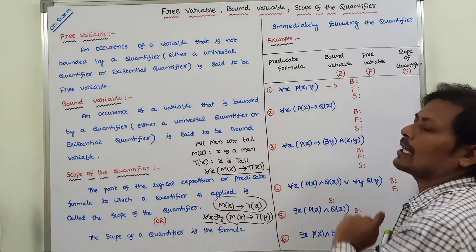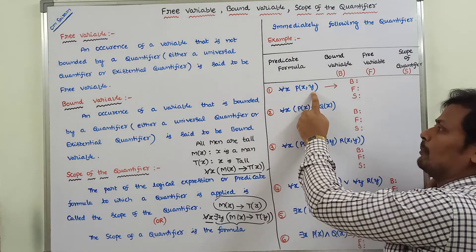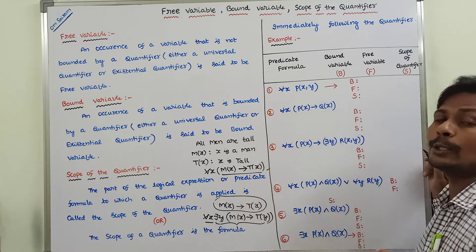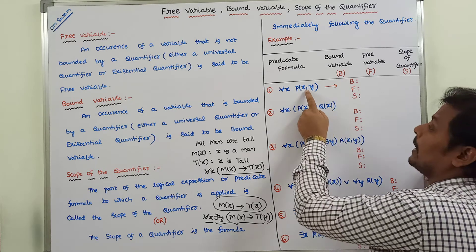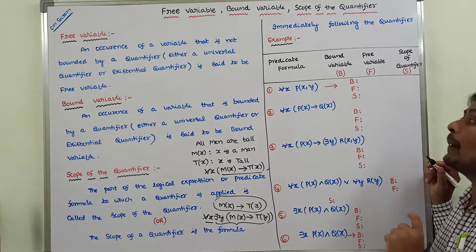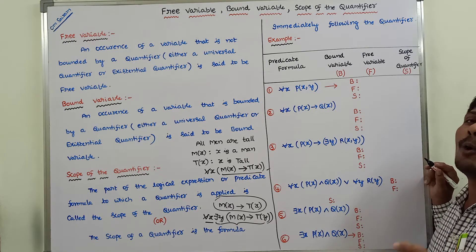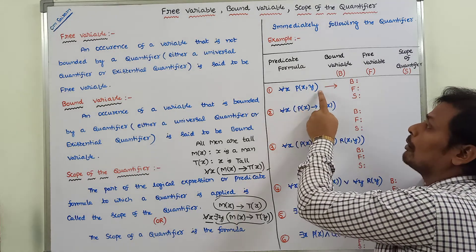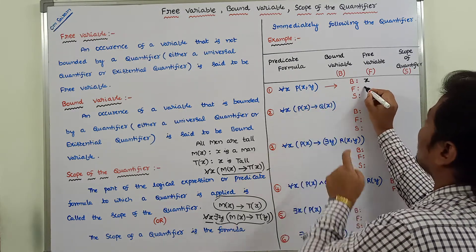For the first one: for all x, P(x, y). Here x and y are called subject variables. P is the predicate belonging to two variables x and y. For variable x, it is bounded with the universal quantifier — for all x — but y is not bounded with any quantifier. So x is called the bounded variable and y is called the free variable.